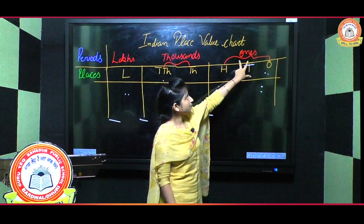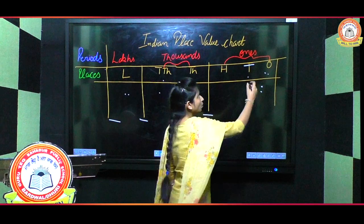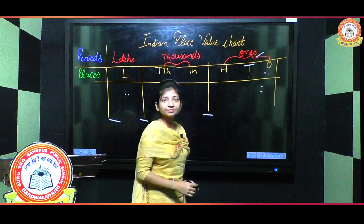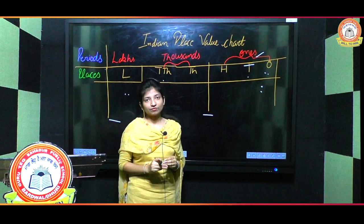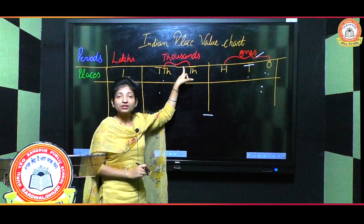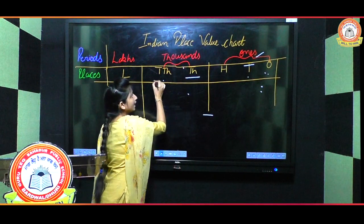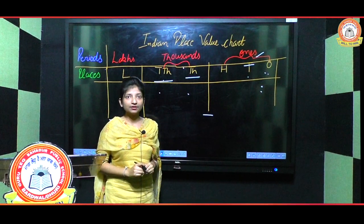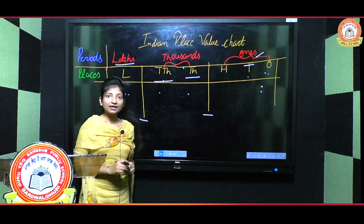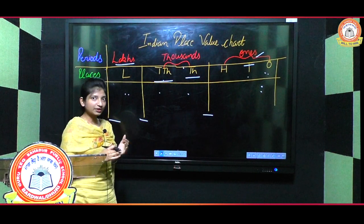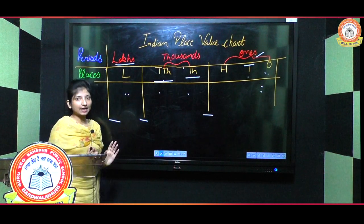In the first period — ones, tens, hundred — three places are there. This is the ones period. After that comes the thousands period, which consists of thousand and ten thousand — two places. After that is the lakh period, which consists of lakh and ten lakh. According to your syllabus, up to lakh place value is covered today.